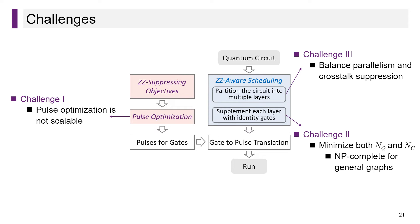Next, we briefly describe the challenges in applying our approach in practice and show how we address them. The first challenge is that pulse optimization is not scalable. As we mentioned before, the time consumption grows exponentially with the number of qubits. The second challenge arises when inserting identity gates. We expect to minimize both N_q and N_c. However, as we will discuss later, this is NP-complete for general graphs. The third challenge is circuit partitioning. As it is impractical to test all the possible partitioning schemes, we need an efficient method.